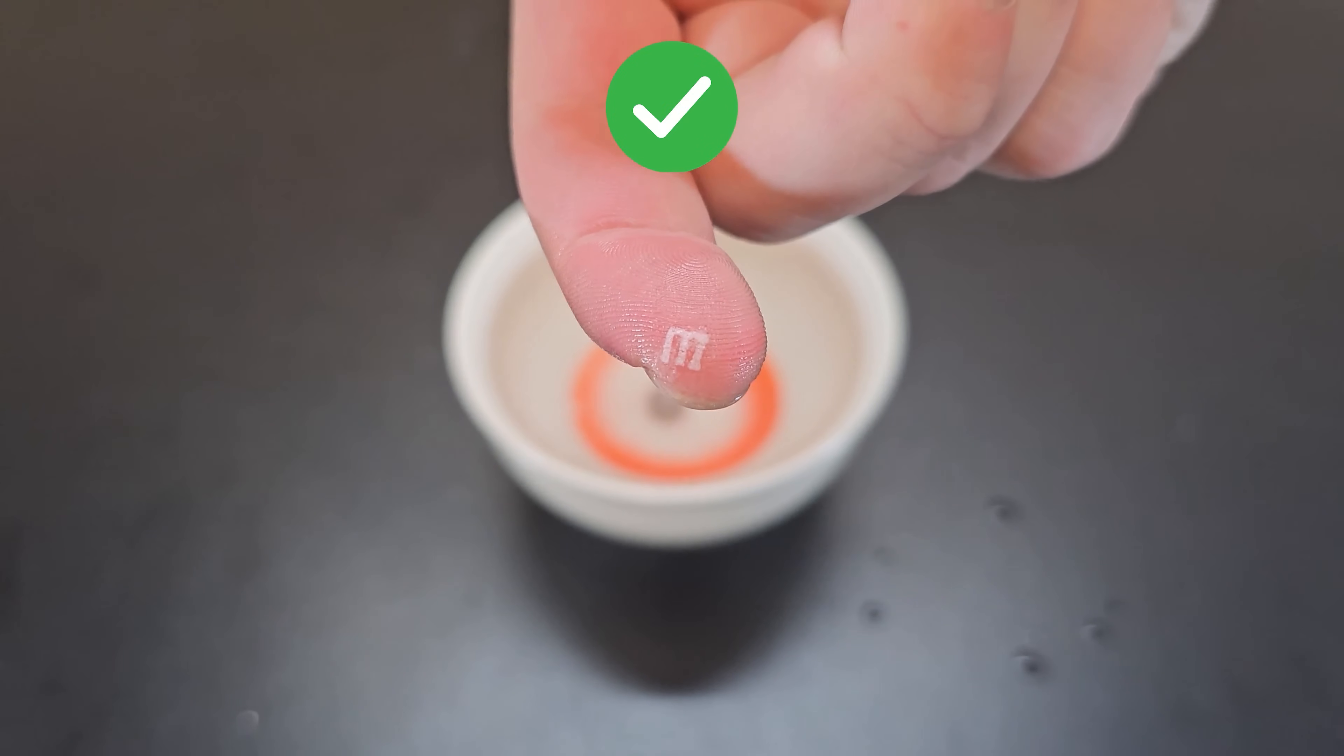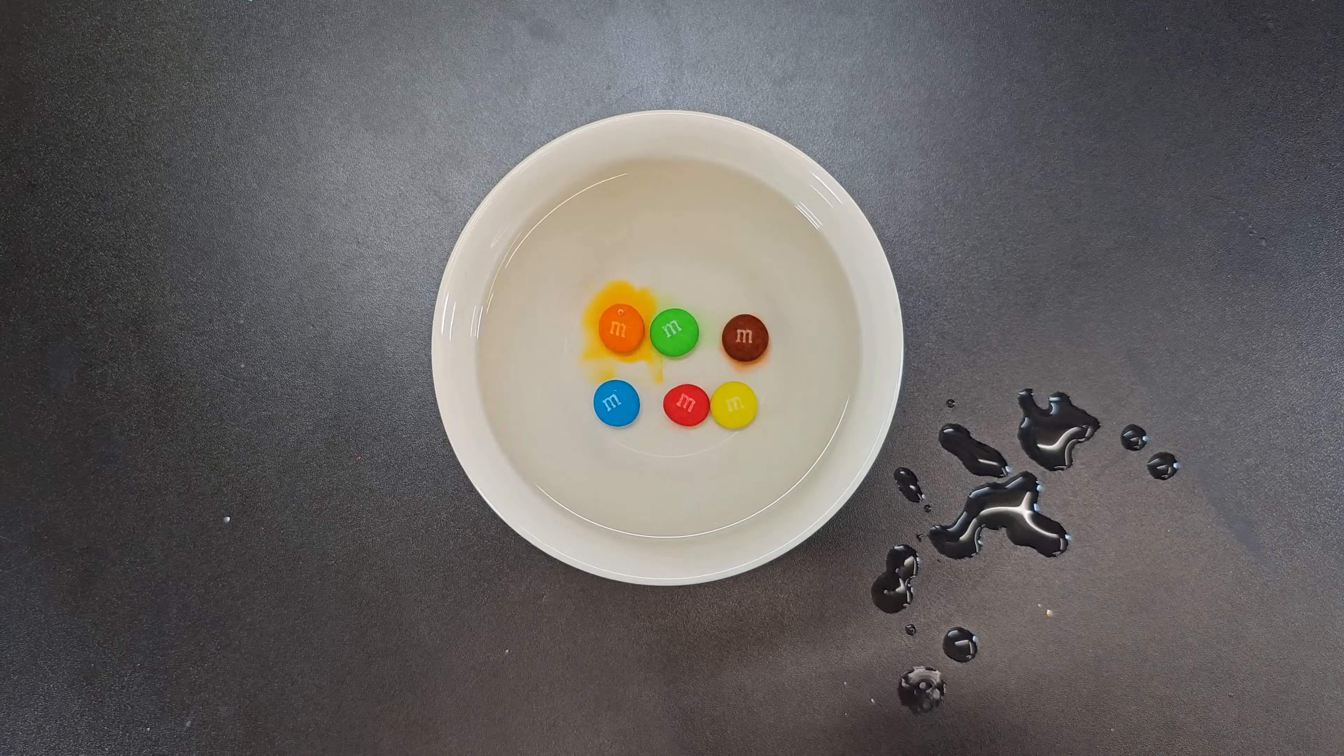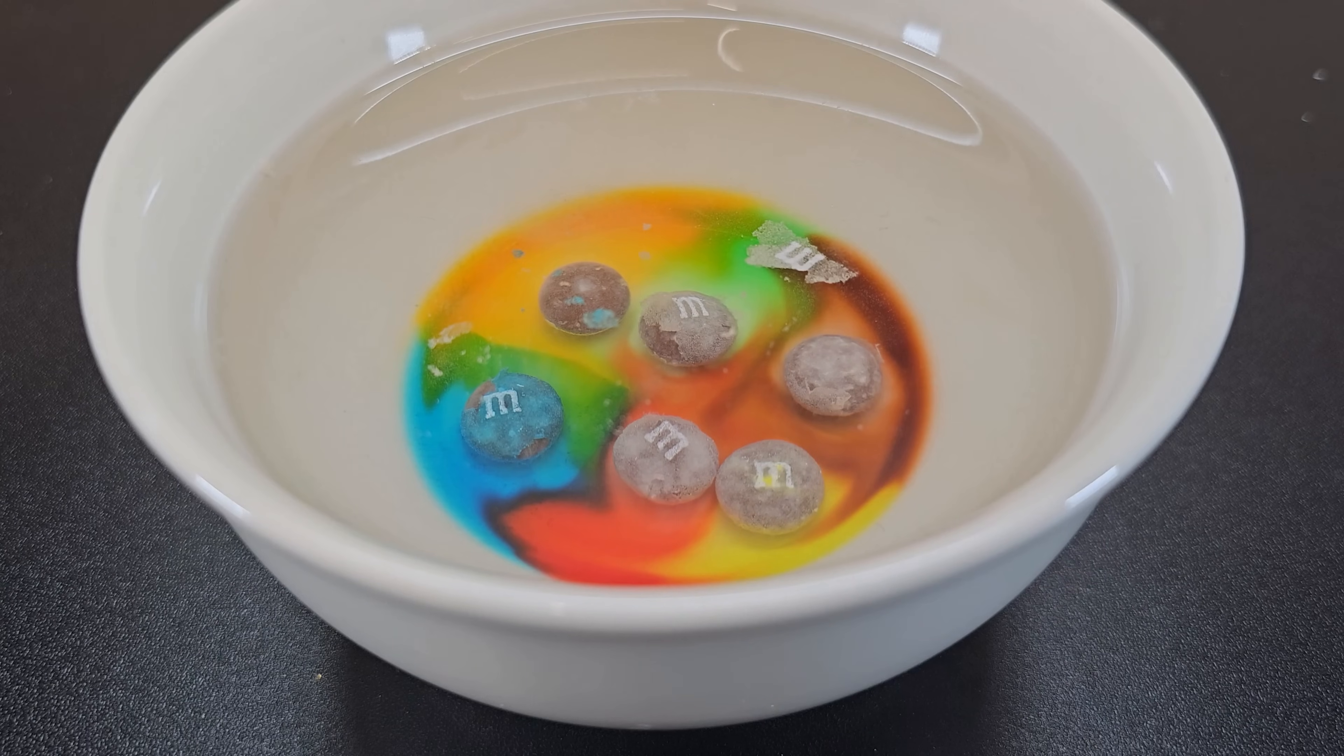It's true that placing M&Ms in water will allow you to remove the M because they aren't water soluble. The letters are pretty fragile though so you have to be careful when picking them up to keep them intact and sometimes they don't detach in one piece.